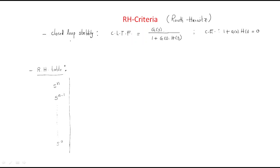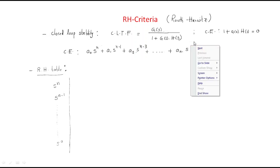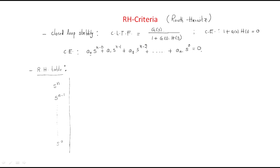Assume a general characteristic equation: a₀·sⁿ + a₁·sⁿ⁻¹ + a₂·sⁿ⁻² and so on up to aₙ·s⁰. Here the coefficient a₀ corresponds to the maximum power sⁿ, a₁ corresponds to sⁿ⁻¹, a₂ to sⁿ⁻², and so on in descending order.